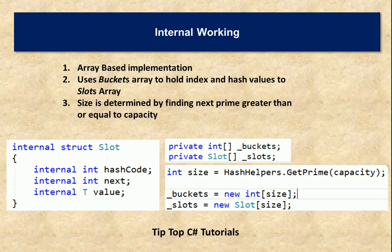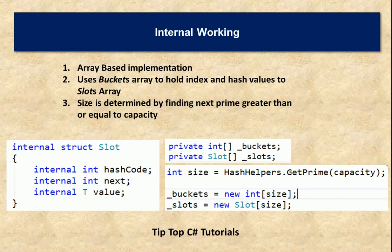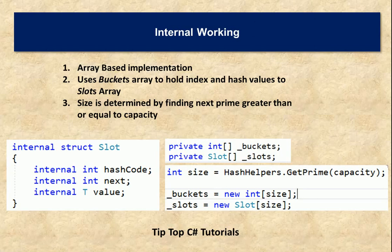Let's look at how a HashSet works internally. It is an array-based implementation and behind the scenes it uses an integer array called a bucket to hold the index of values. The hash value is calculated and along with the value it is stored in a slots array. A slot is a structure that has a hash code (an integer), a next pointer which points to the next item if multiple values share the same slot, and the actual value. HashSet is only available as a generic version in .NET framework 4.0 and above.